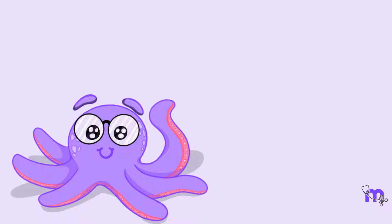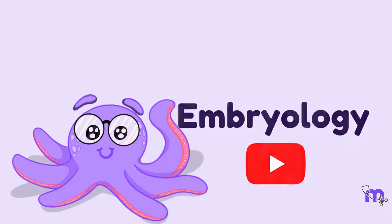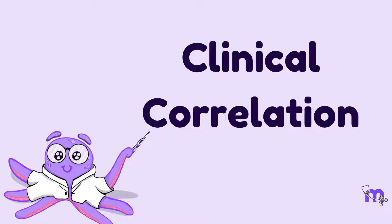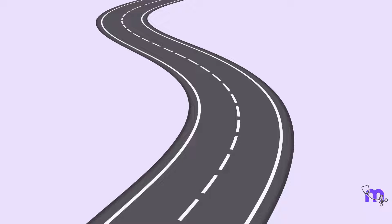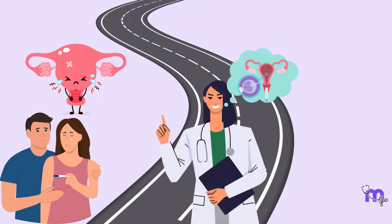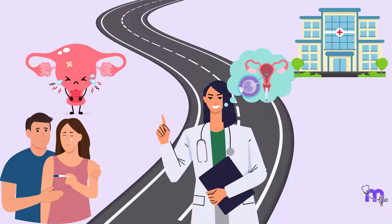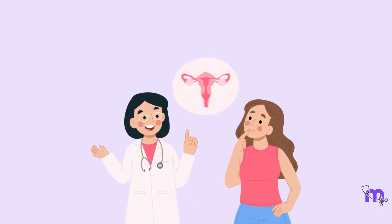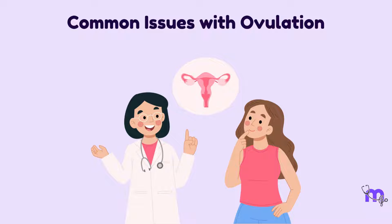The subsequent stages of development will be discussed in future embryology sessions. Let's move on to the clinical correlations of ovulation, fertilization, and implantation. There are numerous ways these processes can fail, resulting in failure of reproduction. Research and medicine have come a long way in minimizing these clinical issues, and many options are now accessible to most people.